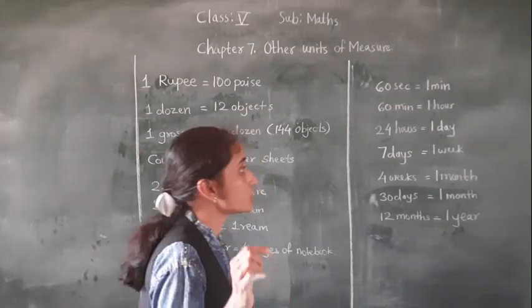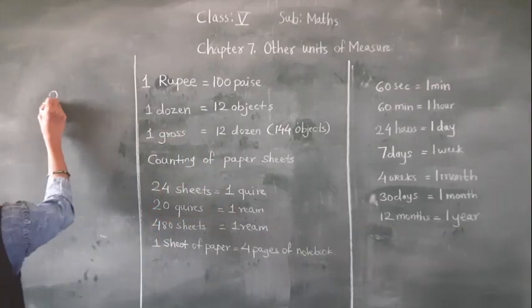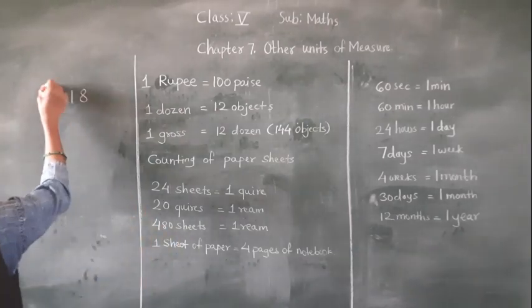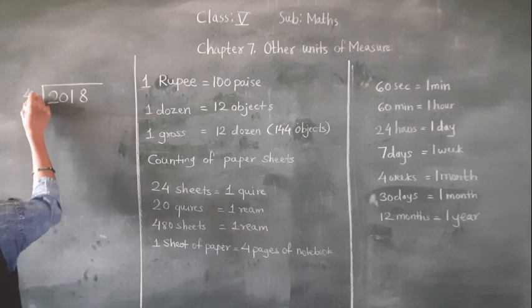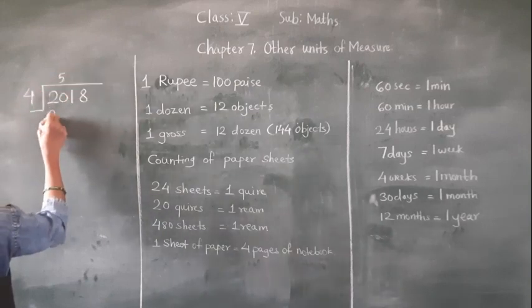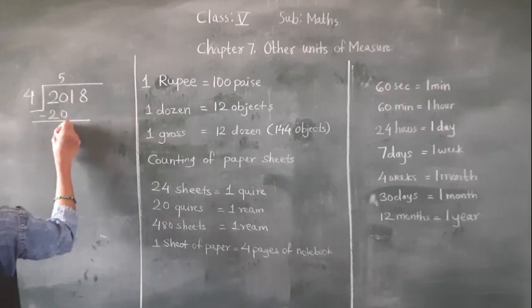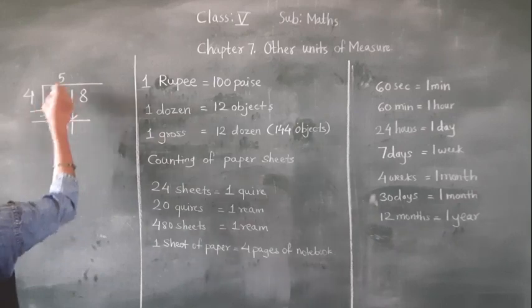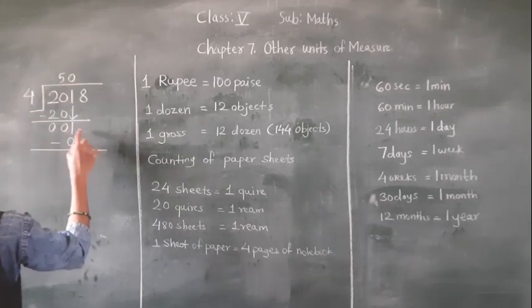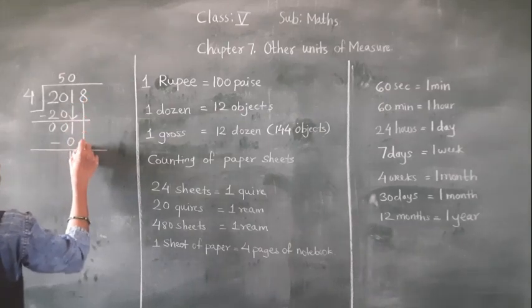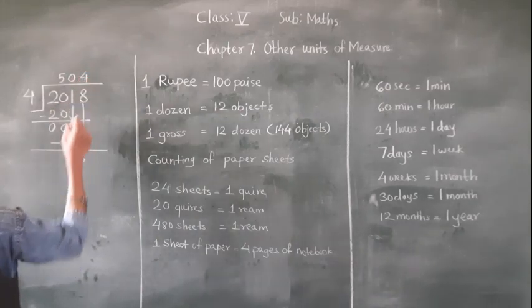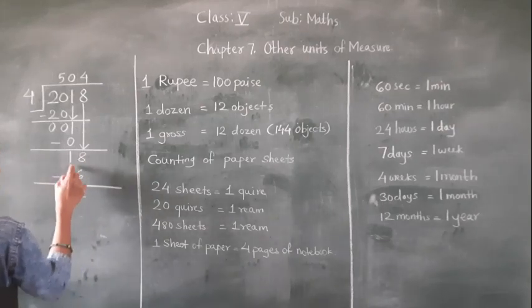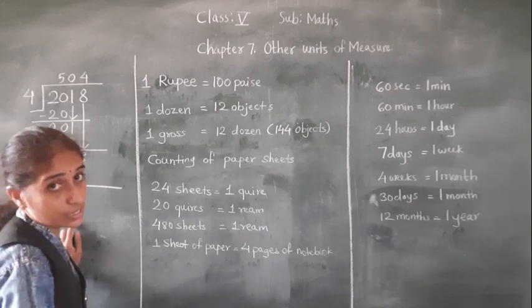Take the year — suppose 2018. We have to check if this year is a leap year or not. Divide by 4: 4 fives are 20, 0 minus 0 is 0, 2 minus 2 is 0, then 1 comes down — 4 zeros are 0, 1 minus 0 is 1, 8 comes down — 4 fours are 16, 8 minus 6 is 2, remainder is 2.